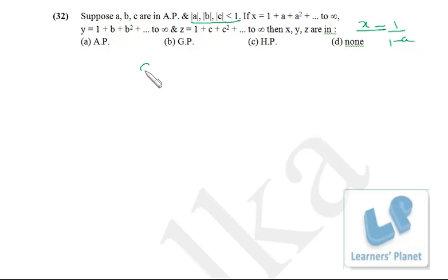So what I do is a, b, c I assume 1 by 4, 1 by 2 and 3 by 4. Common difference between the two consecutive terms is 1 by 4 and a, b, c are in AP over here.